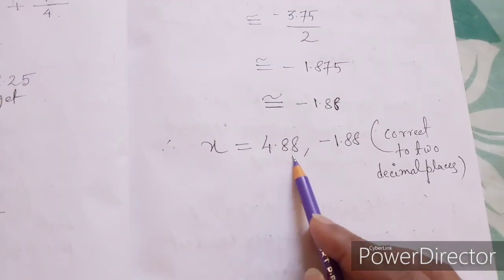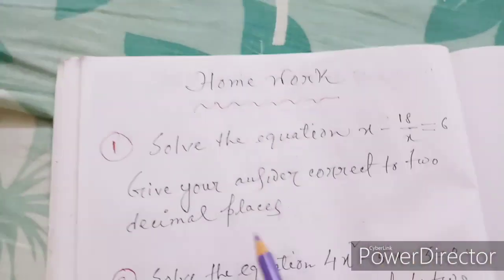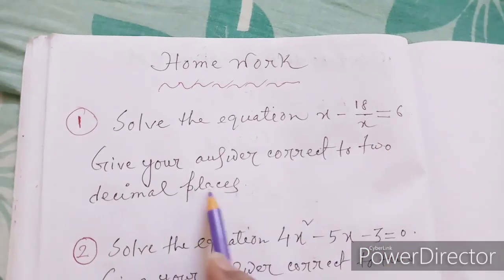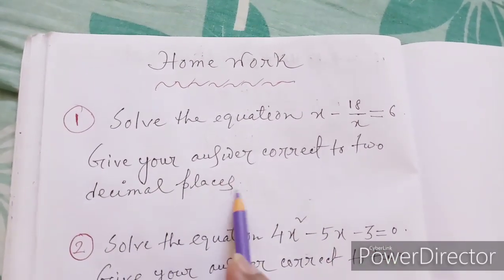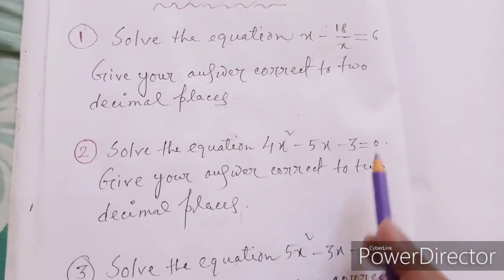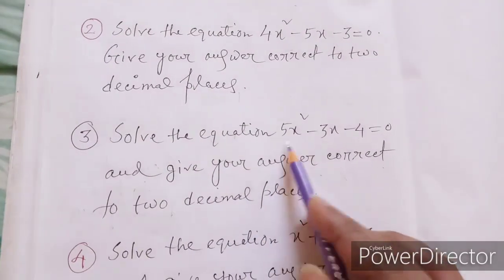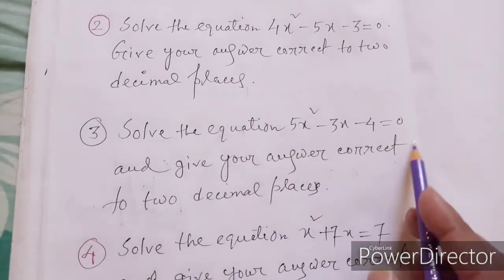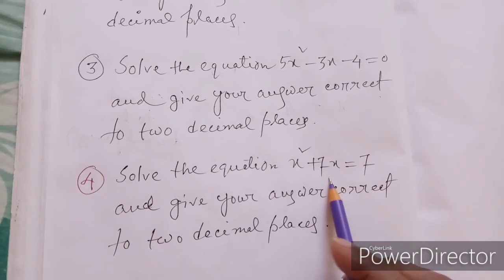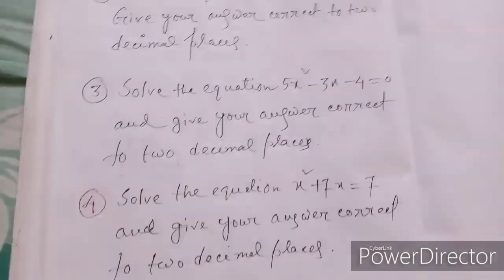Homework: (1) Solve x - 18/x = 6, correct to two decimal places. (2) Solve 4x² - 5x - 3 = 0, correct to two decimal places. (3) Solve 5x² - 3x - 4 = 0, correct to two decimal places. (4) Solve x² + 7x = 7, correct to two decimal places.